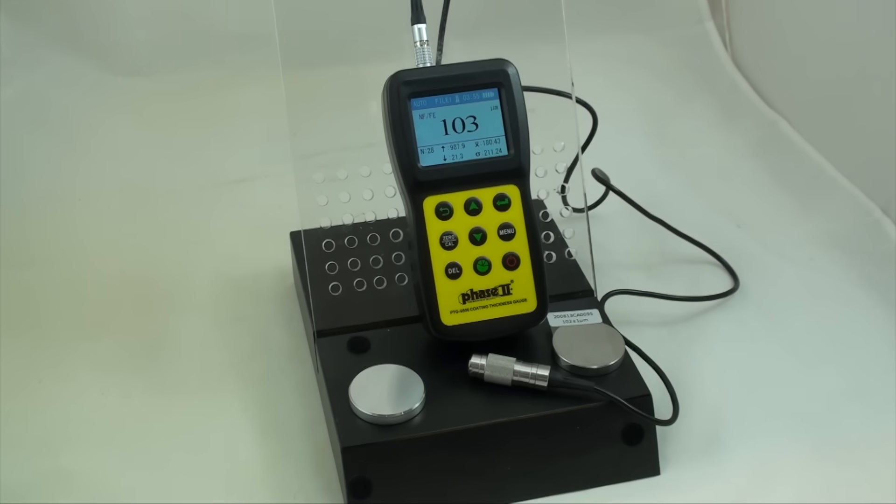Phase II offers two models in this series of coating thickness gauges. The PTG 4000 comes with a built-in probe, and here the PTG 5500 with an external probe which may help in tight testing spots.